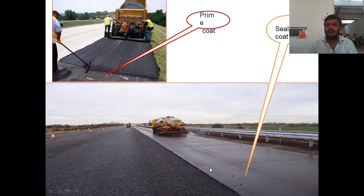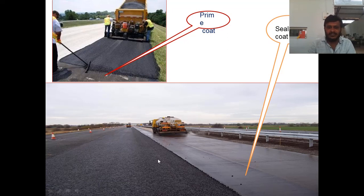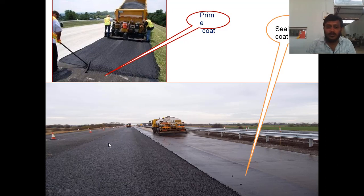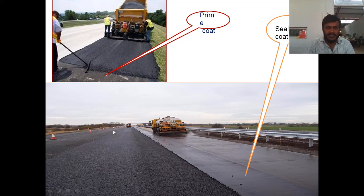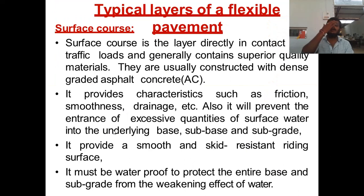Recapping the coats: prime coat is provided on the base course, tack coat is provided on the binder course, and seal coat is provided on the surface course. The surface course is quite porous, so to seal off those pores a seal coat is provided, making it waterproof and preventing water from percolating through the pavement layers.